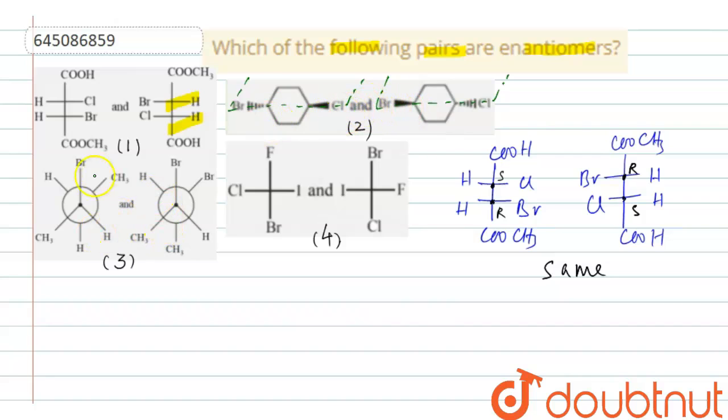Then this third one: here we have one bromine, but here we are having two bromine atoms. Similarly, here we are having one methyl group, but here it is having two methyl groups. So they are not isomers. These two are not isomers. Therefore, they cannot be enantiomers.